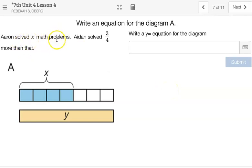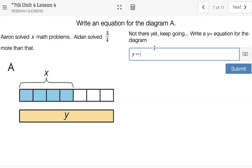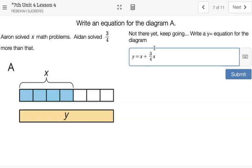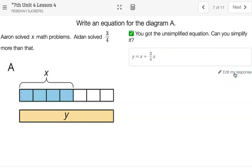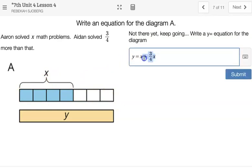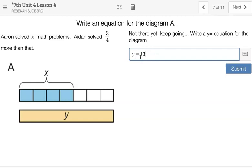All right. So here it looks like Aaron solved X math problems and Aiden solved 3 fourths more than that. So if we have Y equals, we have right down here, this looks like Aiden down to the bottom and Aaron's is original X. So it looks like Aiden, we might have a couple options and we'll see what does most likes. But I might say Y equals, if Aaron was X and then Aiden was 3 fourths more than that, I might say plus 3 fourths X. That would be called an unsimplified equation. It asks me above, can I also simplify it? So I might say this, I have this full X plus a 3 fourths. I might say it's 1 and 3 fourths X. So I might change this to Y equals 1 and 3 fourths.